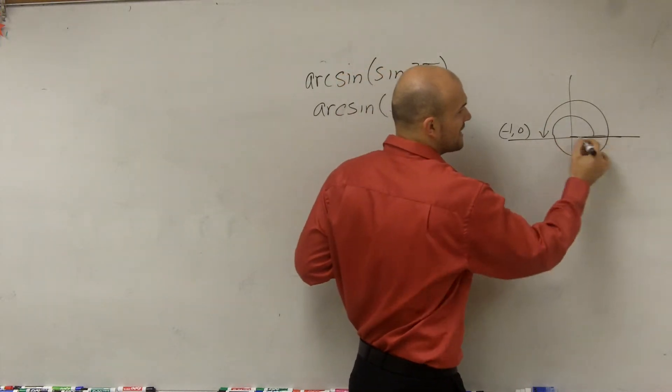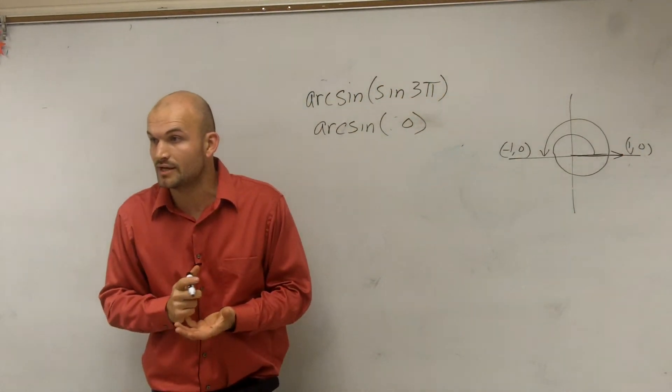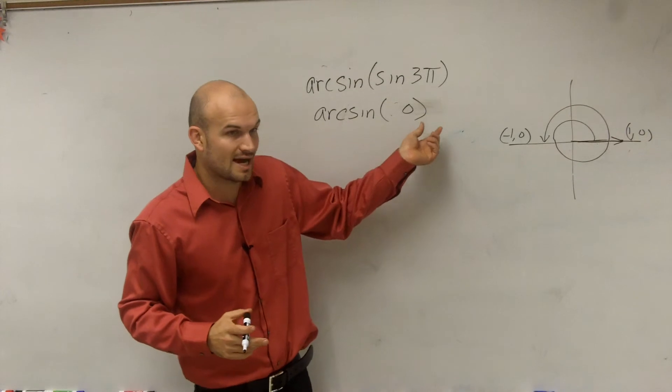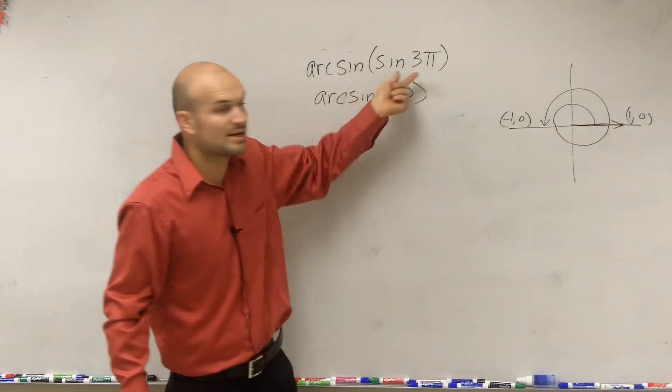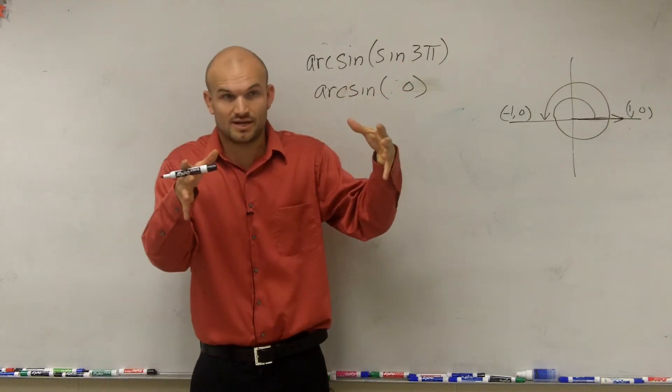However, if we just took the angle 0, that would still provide us the same result. So when we take the arc sine, it's not going to be 3π. Because remember, we were taking the inverse.